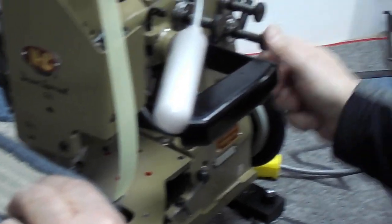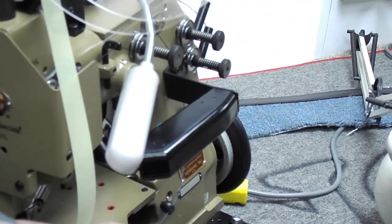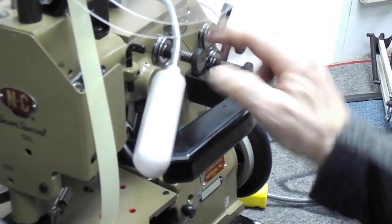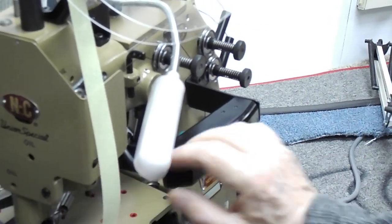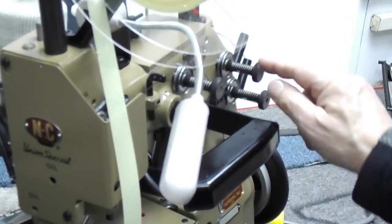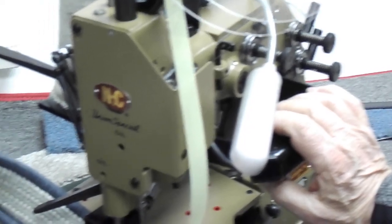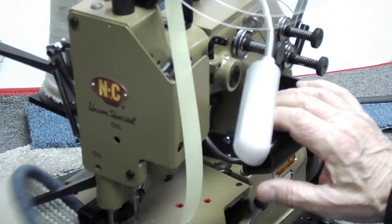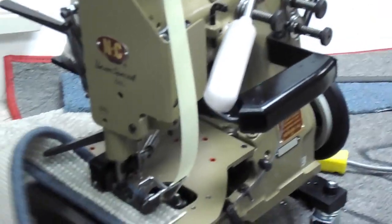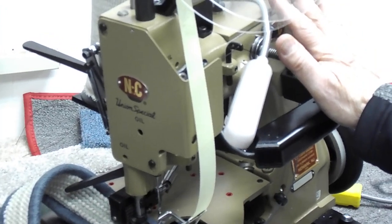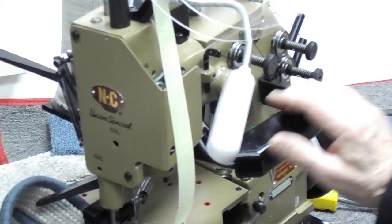You either loosen the tension on your yarn a little bit to make it easier for the needle thread tensions to pull it around, or you can tighten each needle thread tension one full turn, and normally that does the trick. Once you get your yarn to wrap all the way around, you do not continue to tighten your tensions. You leave them where they are.